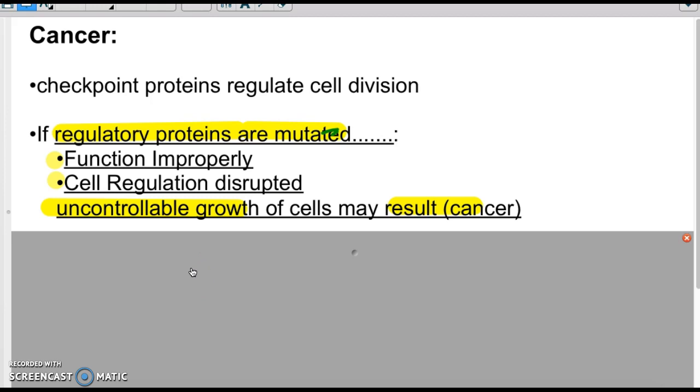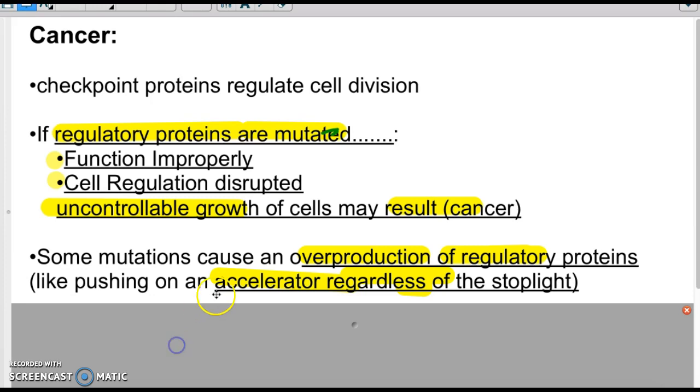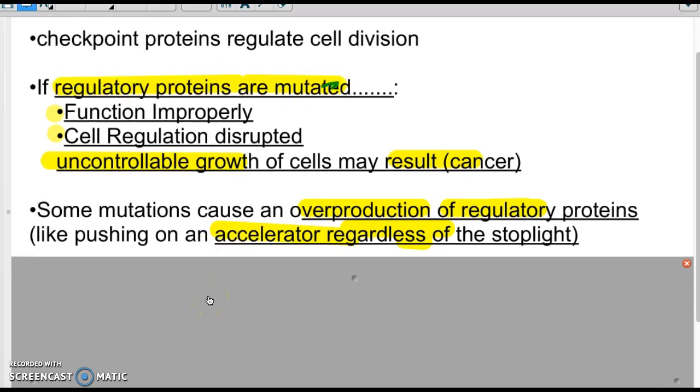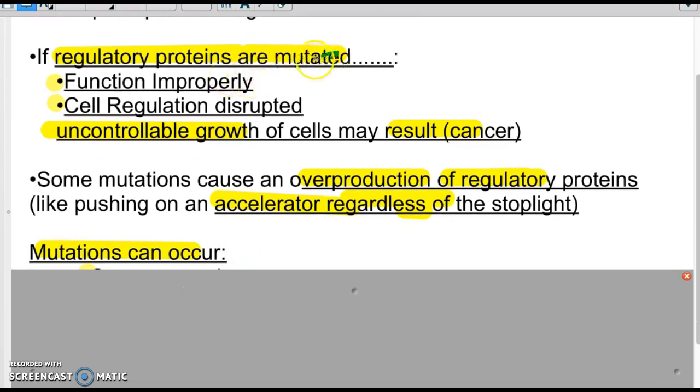And so some mutations can cause maybe an overproduction of regulatory proteins. And so it just basically accelerates the cell cycle even farther, regardless of the stoplights. Like I said, they ignore them. And so when we say the proteins have been mutated, when we say that, well, what could cause mutations?